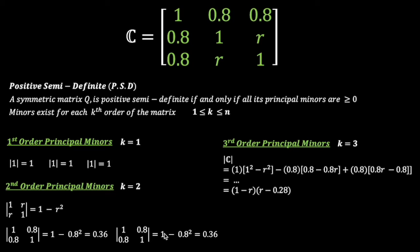For third order, k equals 3, so we remove zero rows and columns. There is only one principal minor — the determinant of the original 3x3 correlation matrix itself, which reduces after arithmetic to 1 minus r times r minus 0.28. Notice that all principal minors across all orders have diagonal elements that come from the main diagonal of the original 3x3 matrix.